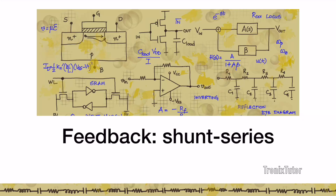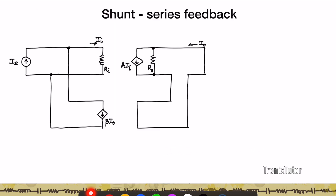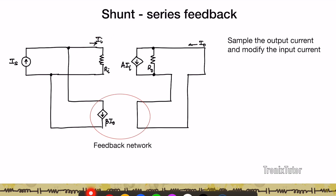In this last of the feedback videos, let's look at the final feedback network, which is a shunt-series feedback. In shunt-series feedback, the feedback network appears as a shunt at the input, meaning it is a current that is being corrected. The output is sampled as a series, so this is applied in a current amplifier where the input and output are both currents. The feedback network samples the output current and generates a current proportional to the output current.